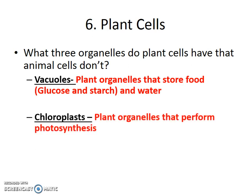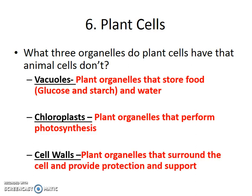Chloroplasts are the organelle that allows a plant to photosynthesize. All plant cells have chloroplasts, but certainly leaves have more chloroplasts than stems, which don't have very many at all. Lastly, you get cell walls — plant organelles that surround every cell and protect it. These cell walls are usually so thick that they actually provide some support to the cells as well.